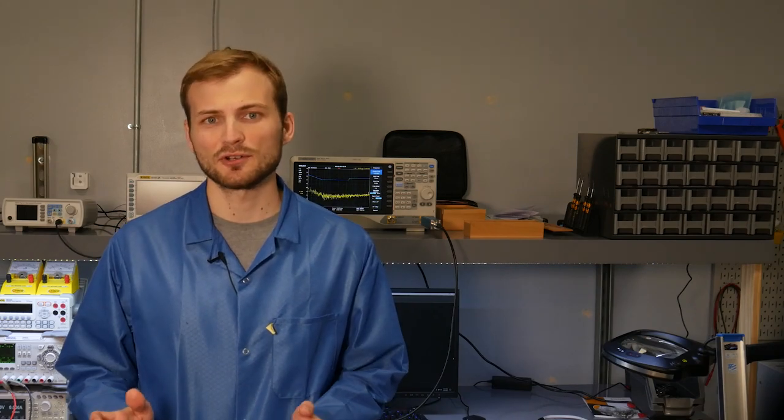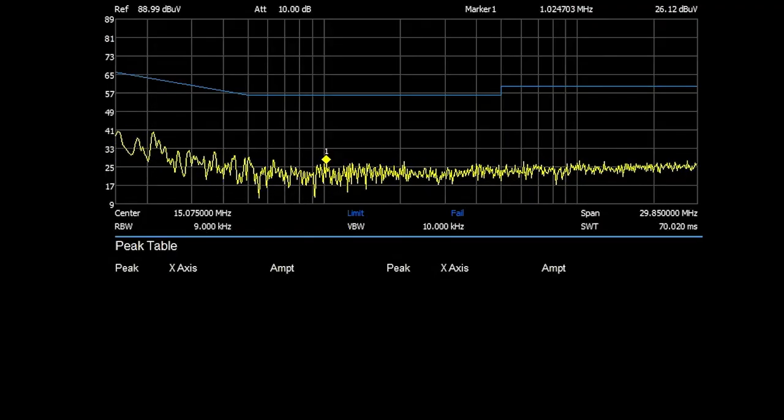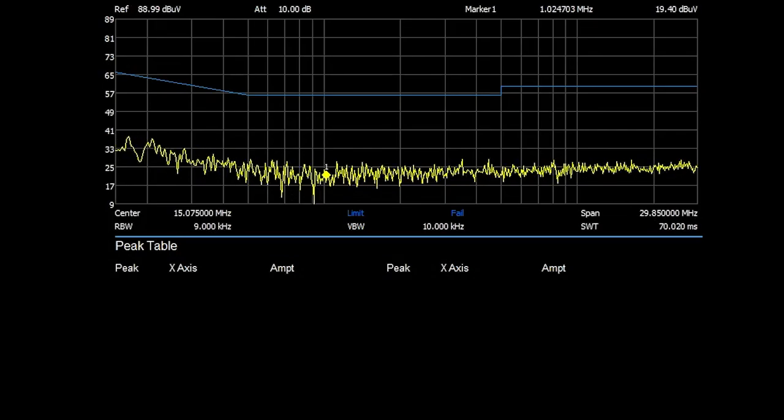To make absolutely sure that the cause of that 210 kilohertz peak is the common mode choke, I went ahead and just removed it and then shorted it across. This completely removed that spike and now there are no peaks that come anywhere close to the limit.